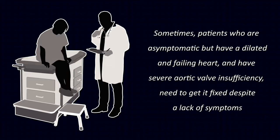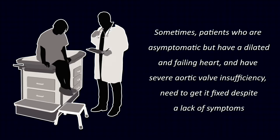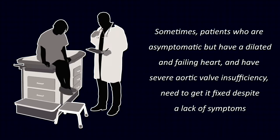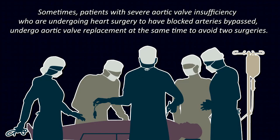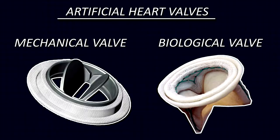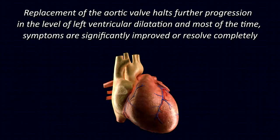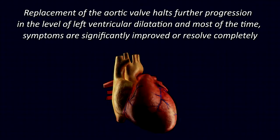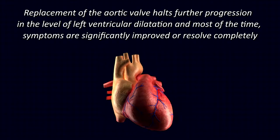Sometimes patients who are asymptomatic but have a dilated and failing heart with severe aortic valve insufficiency need to get it fixed despite a lack of symptoms. Sometimes patients with severe aortic valve insufficiency who are undergoing heart surgery to have blocked arteries bypassed undergo aortic valve replacement at the same time to avoid two surgeries. Every situation is unique and the choice between mechanical or tissue valve follows the same recommendations as discussed for aortic valve stenosis. Fortunately, replacement of the aortic valve halts further left ventricular dilation and symptoms are significantly improved or resolve completely.